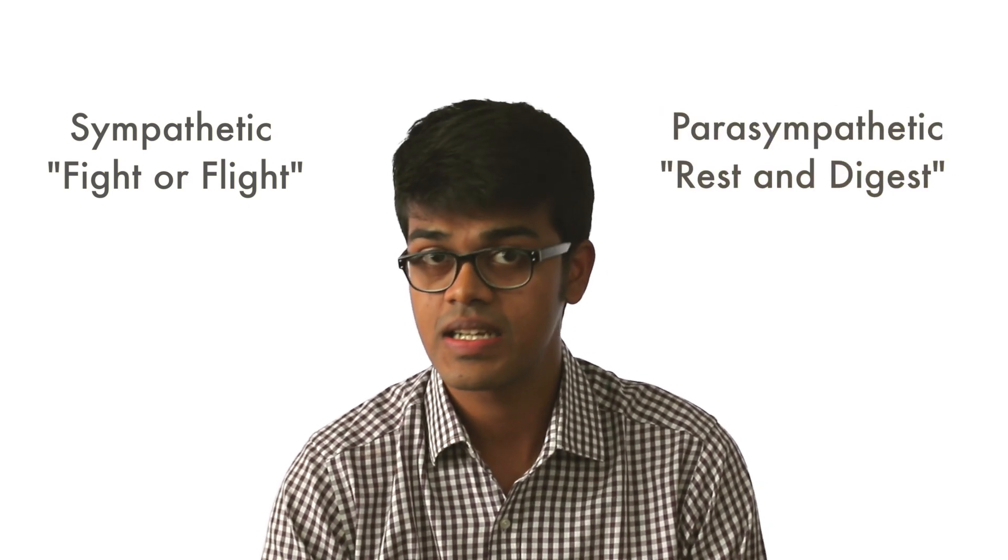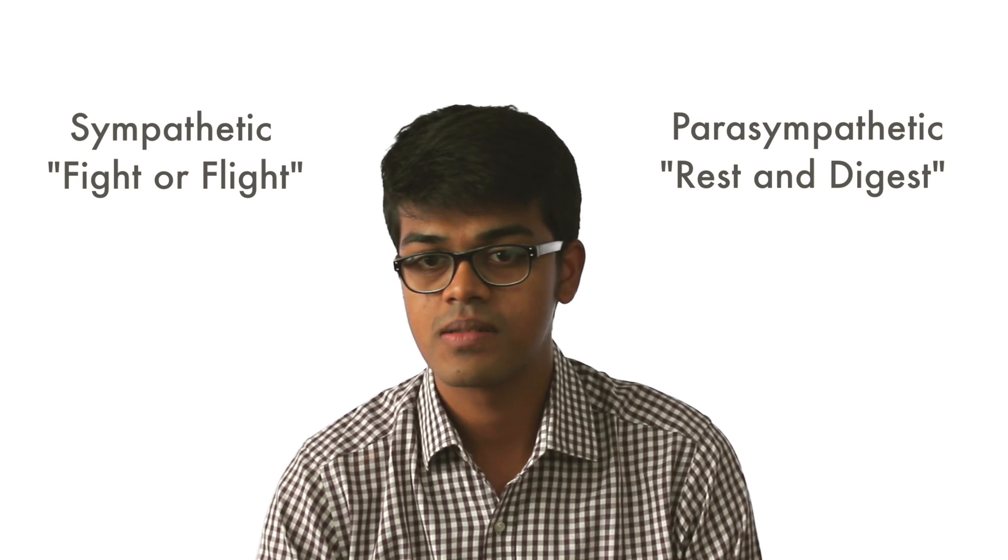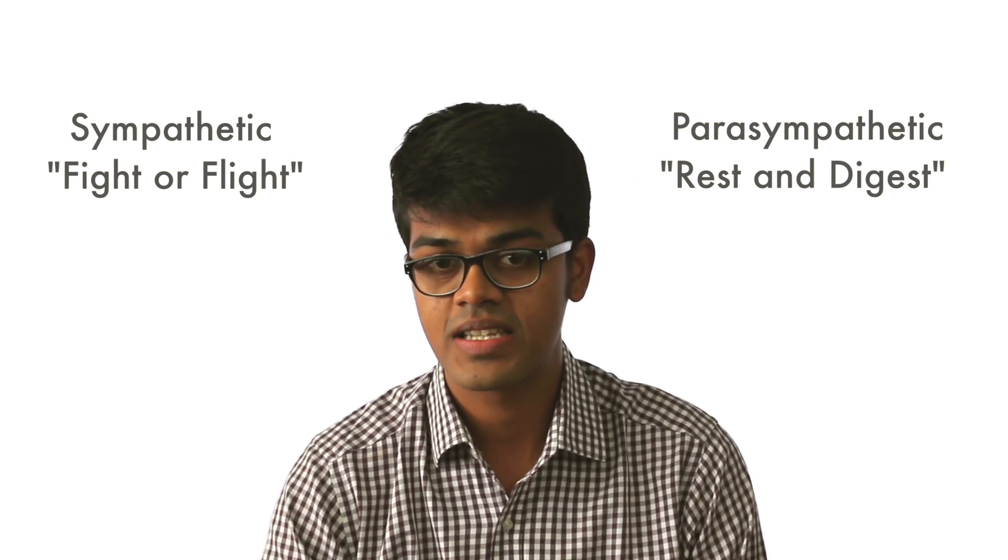The sympathetic part of the autonomic nervous system deals with the fight or flight response of the body, whereas the parasympathetic part deals with the rest and digest conditions. The details of the effector mechanisms and their pharmacological implications will be dealt with in our next video.